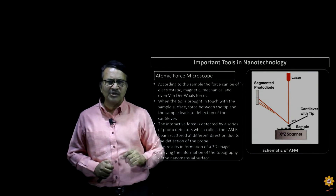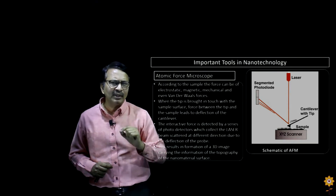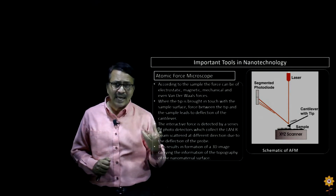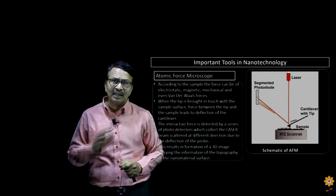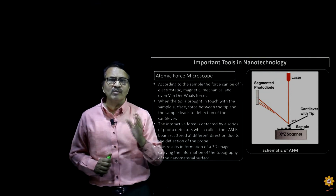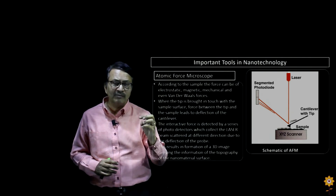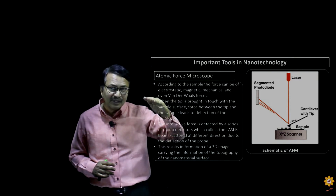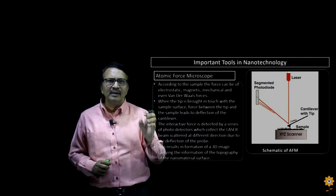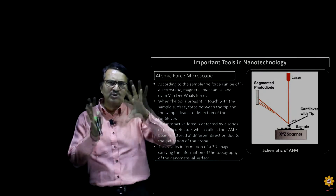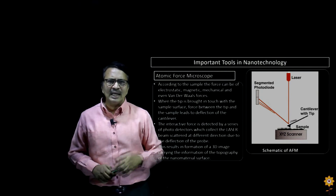One important thing to mention here: the interactive forces that exist between the sample and the tip of the cantilever. These interactive forces can be electrostatic, magnetic, mechanical, or Van der Waals forces. Depending upon the quantity of these forces, the deflection of the cantilever will change accordingly. This deflection is registered by the photodiode and ultimately projected as a 3D image of the surface. This is basically how an AFM functions.